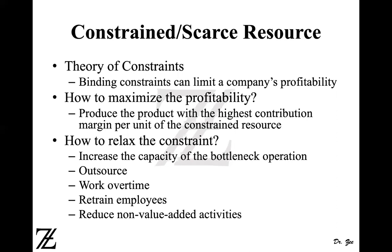What you do is you calculate the contribution margin and then divide by whatever the constraint resource is — whether the resource is in hours, pounds, or area. That gives you the idea of which product provides the highest contribution margin per constraint resource. Whichever product provides the highest contribution margin per constraint resource or production bottleneck is the product you should produce first and sell first.